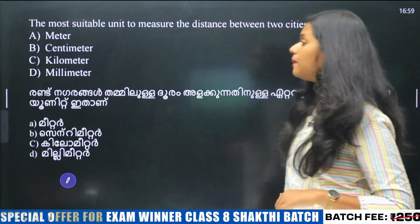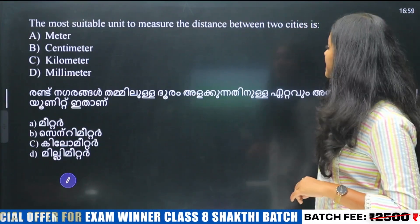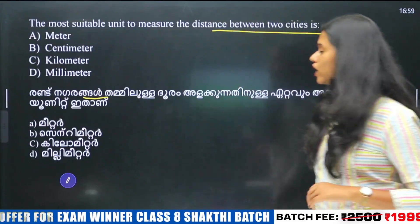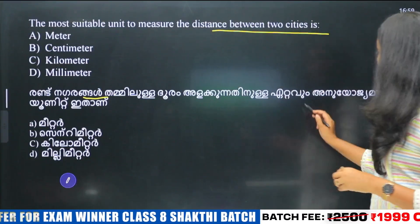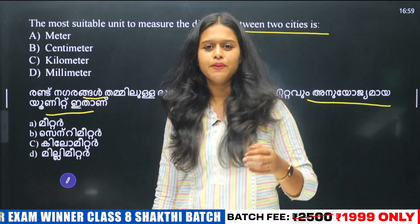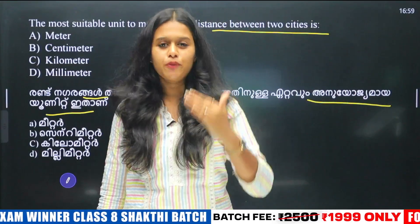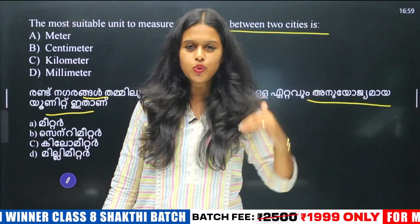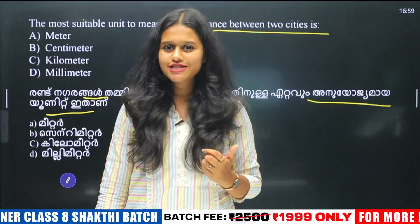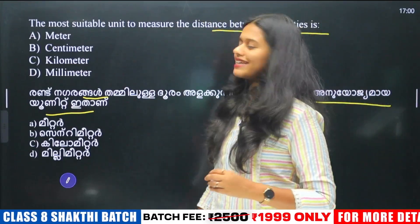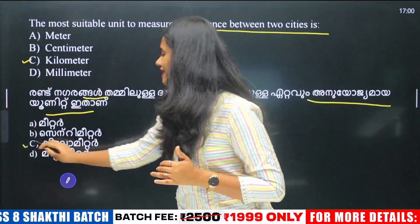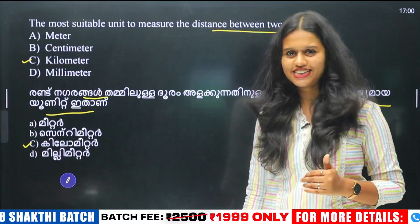The most suitable unit to measure the distance between two cities — the distance between two cities is large. The suitable unit would be kilometers. So option C, kilometer, is the correct answer.